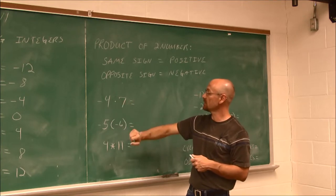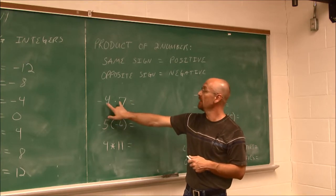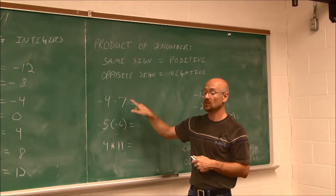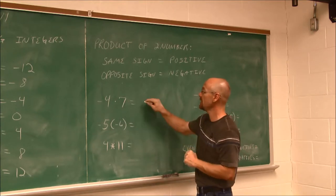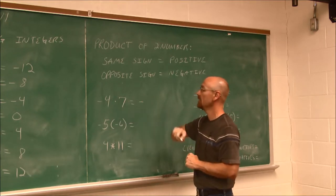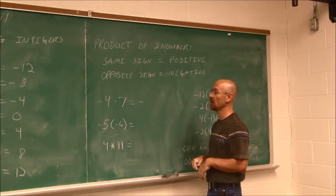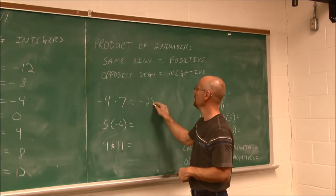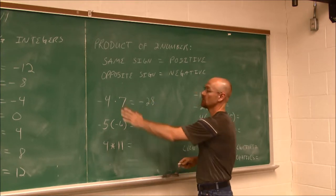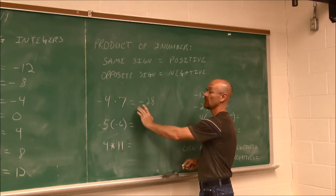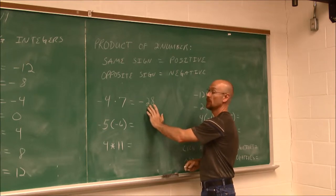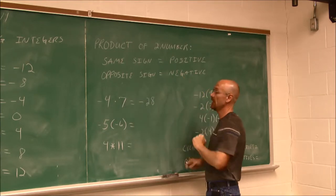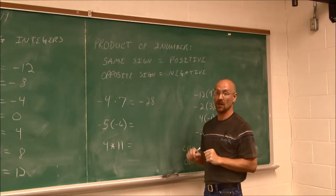Let's use this in these examples. Negative 4 times 7 — these have opposite signs, so I know the answer is going to be negative. Now I can just multiply the numbers: 4 times 7 is 28. So negative 4 times 7 is negative 28. They have different signs — opposite signs — negative output.